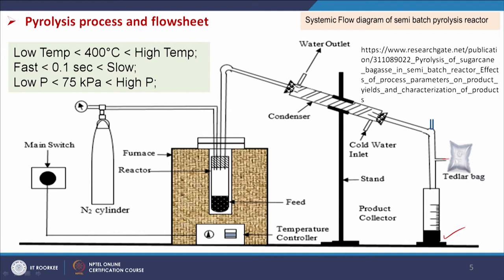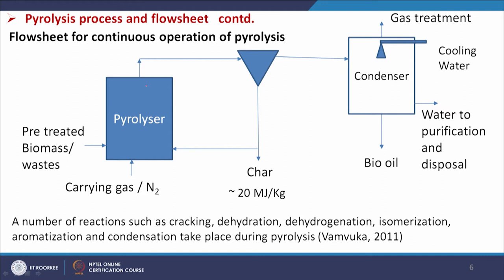The bottom part remaining is charcoal or char. Depending on the temperature — low or high — this corresponds to slow or fast pyrolysis. Fast pyrolysis has a residence time of less than 0.1 seconds. Pressure may also be low or high: low pressure is less than 75 kilo Pascal. These are some typical ranges for batch scale production of pyrolysis oil.